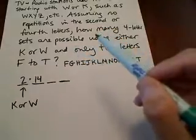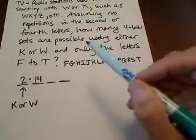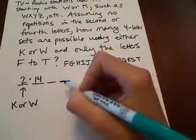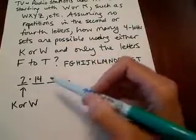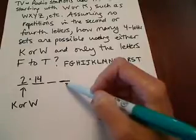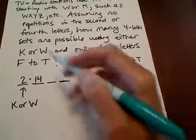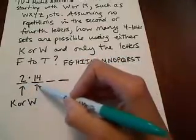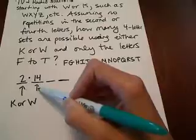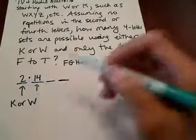Okay. And then let's also count this last one here because this was our second letter. And then it says no repetition in the fourth letter either. So what we have here is either K or W. What we have here is something from F to T that isn't K. And so we have a couple of different letters here.